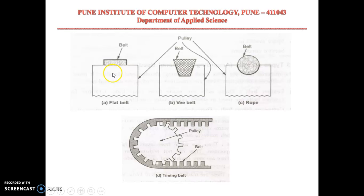In a flat belt drive, the pulley surface is flat, so there are more chances of slip. In a V-belt drive, a groove is generated in the pulley so that the belt is placed in the groove, reducing slip. However, friction will be more in the V-belt case, and because of that, efficiency may be slightly lower.